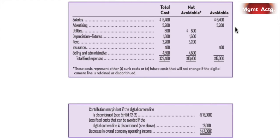We've taken all of the costs and we're going to look at each one to figure out which is avoidable and which isn't. We'll classify them into not avoidable and avoidable. Typically you're given some information on each cost, and working for a company, you'll be the one to decide. For the purposes of exams and exercises, you'll be given the information and you have to make the call. Salaries — if you get rid of the segment, you get rid of all these people. That's avoidable. Advertising — all the advertising dollars relate to the specific product, so we can get rid of that.